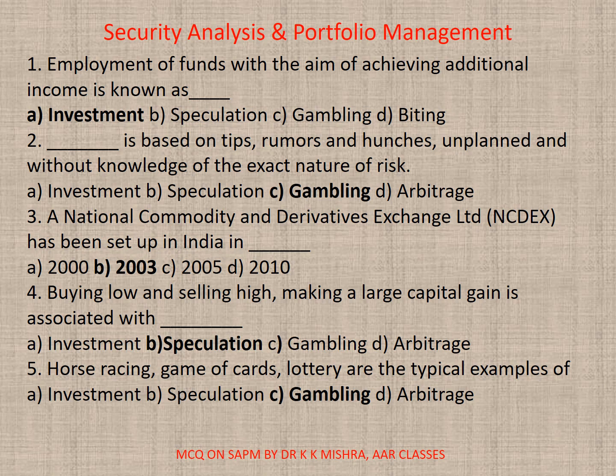Question 3: International Commodity and Derivatives Exchange Ltd. has been set up in India in 2003. Question 4: Buying low and selling high, making a large capital gain is associated with — correct option C: Speculation. Question 5: Horse racing, game of cards, lottery are typical examples of — correct option C: Gambling.